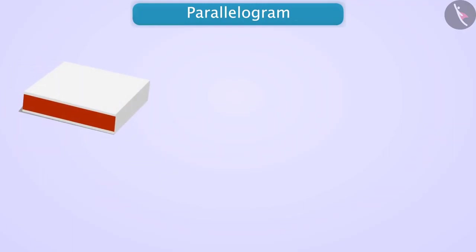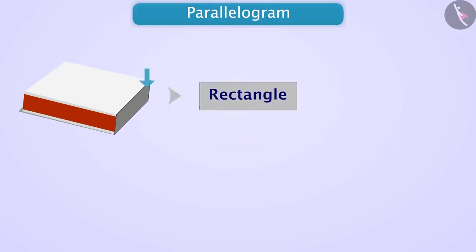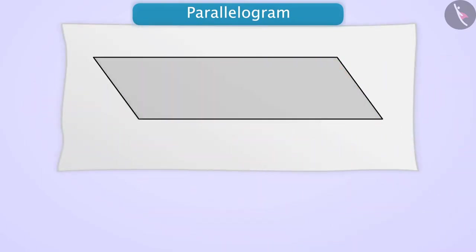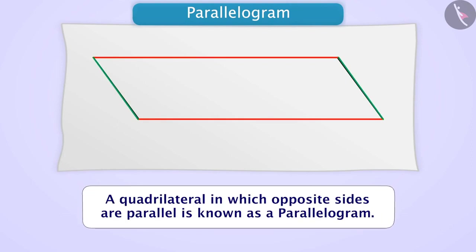Now let us understand the parallelogram. Take out the tray of the matchbox and look carefully at its open side — you will see a rectangle. Now apply pressure on one of its sides so that opposite sides appear closer. Due to this, the shape of the open side changes. Let us draw its outline on paper. Here the measure of the angles will not remain at 90 degrees; instead, it would have changed. But even then, the opposite sides will be parallel. Such a quadrilateral in which the opposite sides are parallel is known as a parallelogram.